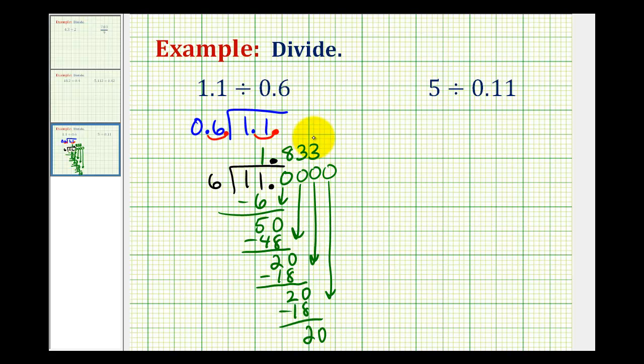The way we write this quotient would be 1.8, and since the 3 repeats, we write the 3 with a bar over it. It's important that we don't put this bar over the 8, because notice how the 8 is not repeating, only the 3.